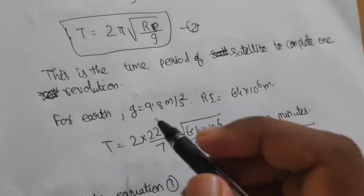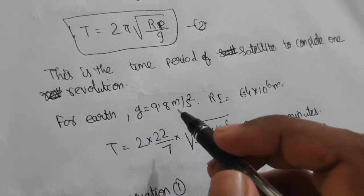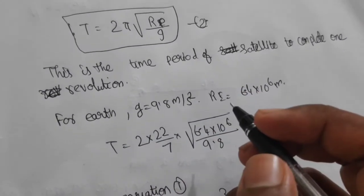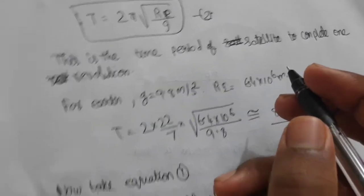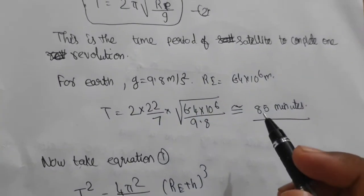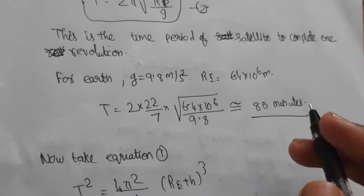For Earth, g = 9.8 m/s² and radius of Earth = 6.4×10⁶ meters. By substituting these values, we get approximately 85 minutes. This shows that a satellite takes 85 minutes to complete one revolution around Earth.